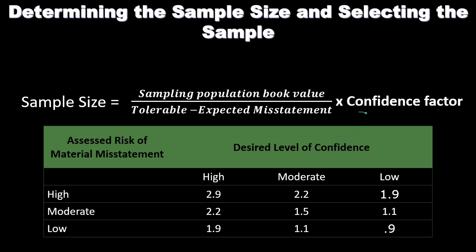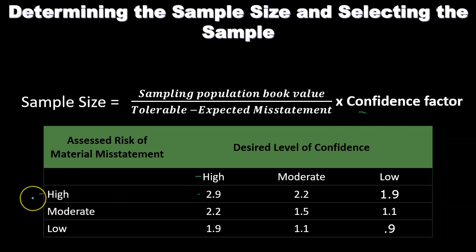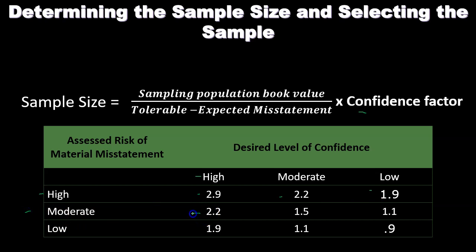This confidence factor might be given in our audit papers. We may have standardized factors from a table where the assessed risk of material misstatement is on one axis and the desired level of confidence is on the other. For example, if we have a high assessed risk of material misstatement and a high desired level of confidence, we use a higher confidence factor such as 2.9. Lower combinations of risk and confidence correspond to lower factors, and you can see how those numbers affect the formula.